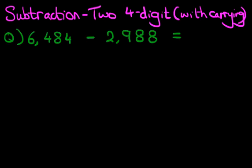So it looks quite tricky, doesn't it? Well, the first stage is, let's rewrite this question into the vertical format. Let's do that over here. 6484 minus 2988.